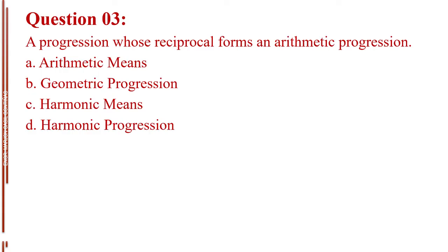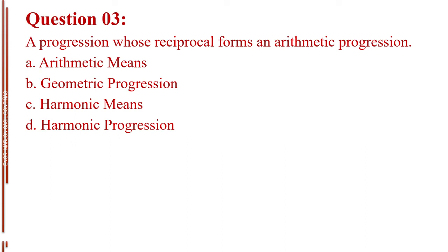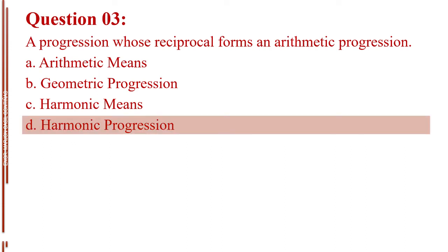Question number three. A progression whose reciprocal forms an arithmetic progression. Letter A, arithmetic means. Letter B, geometric progression. Letter C, harmonic means. Letter D, harmonic progression. The answer is Letter D, harmonic progression.